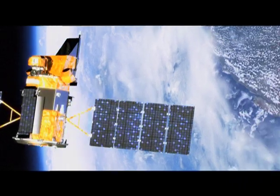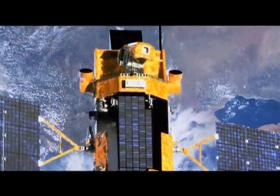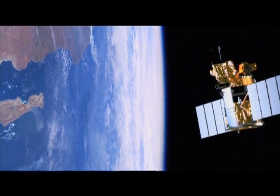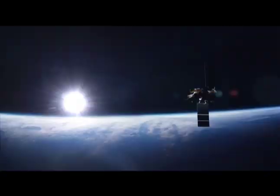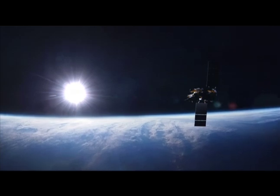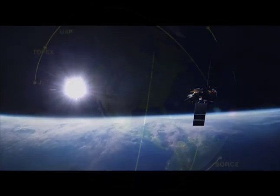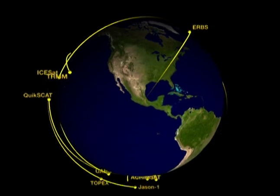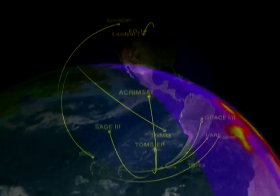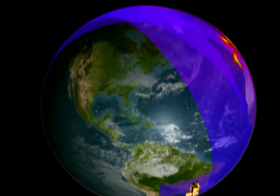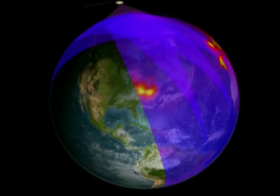NASA's upcoming GLORY mission will measure two key climate forcings: solar irradiance and atmospheric aerosols. These measurements will help to improve the accuracy of global climate models. NASA missions like GLORY will help scientists fine-tune their understanding of Earth's climate, providing a more accurate diagnosis of the Earth's health today and far into the future.